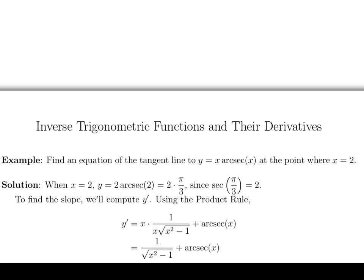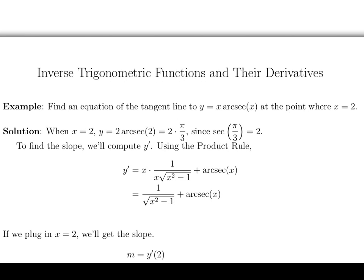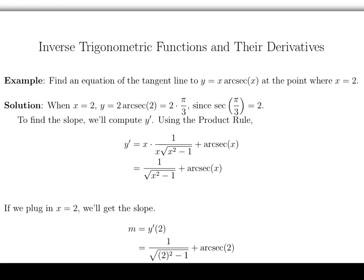Now we're going to get the slope. We'll do that by plugging in x equals 2 into this derivative. Alright, so the slope is y prime of 2. Plug that into the derivative to get 1 over the square root of 2 squared minus 1 plus arc secant of 2.